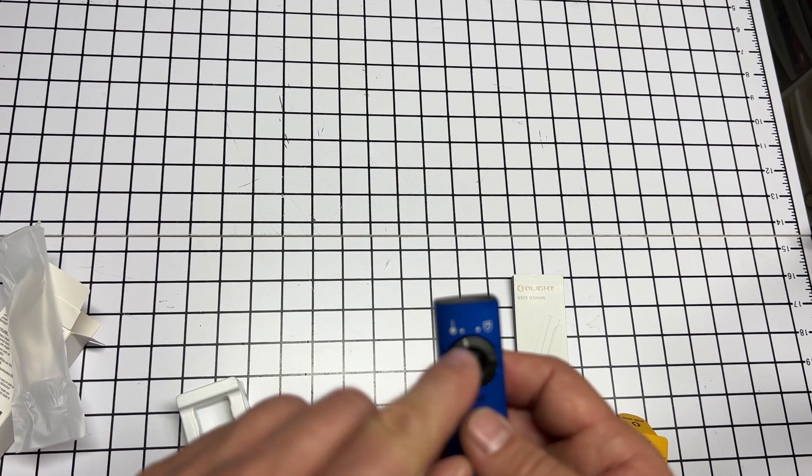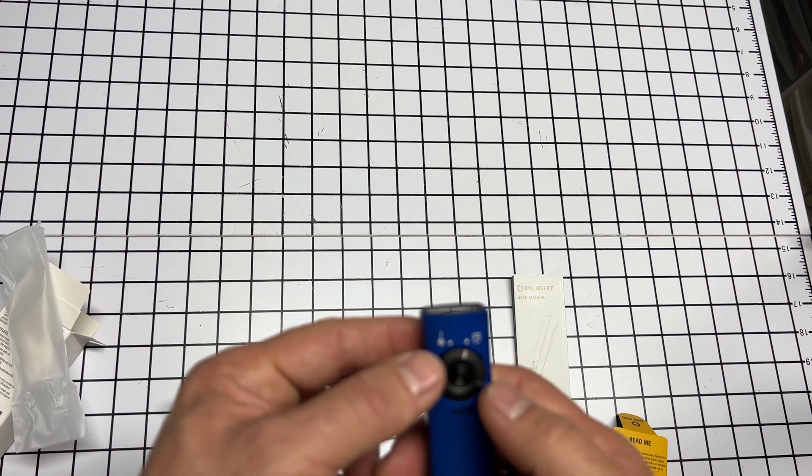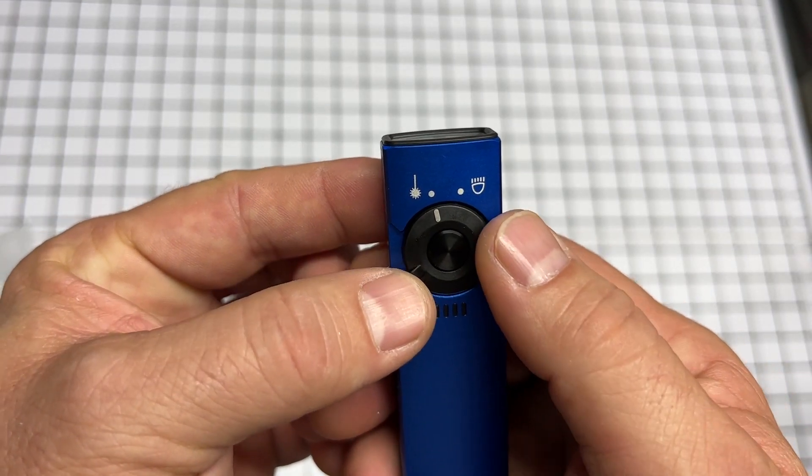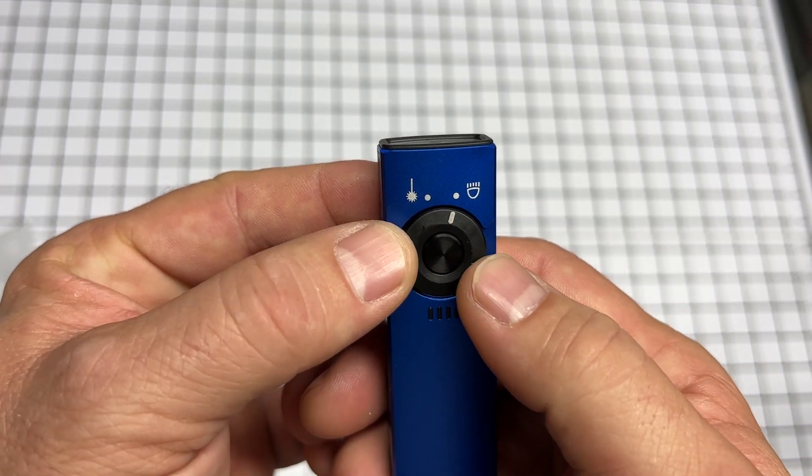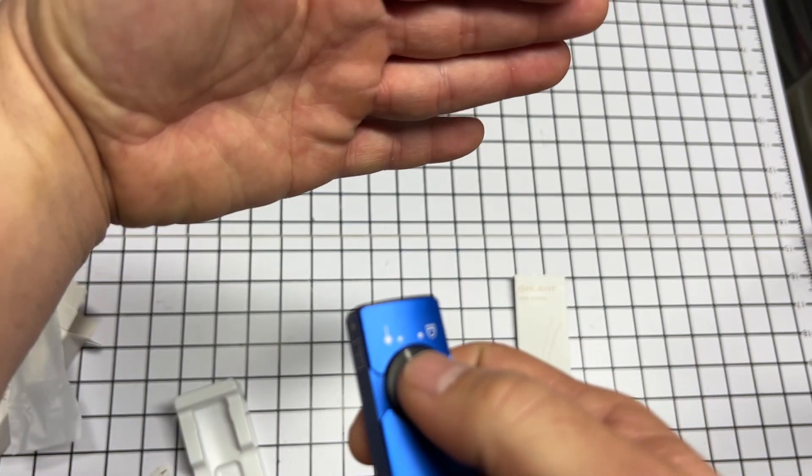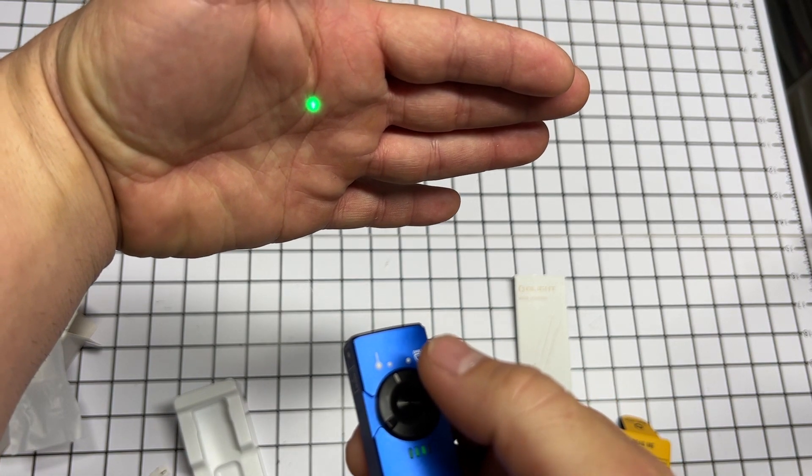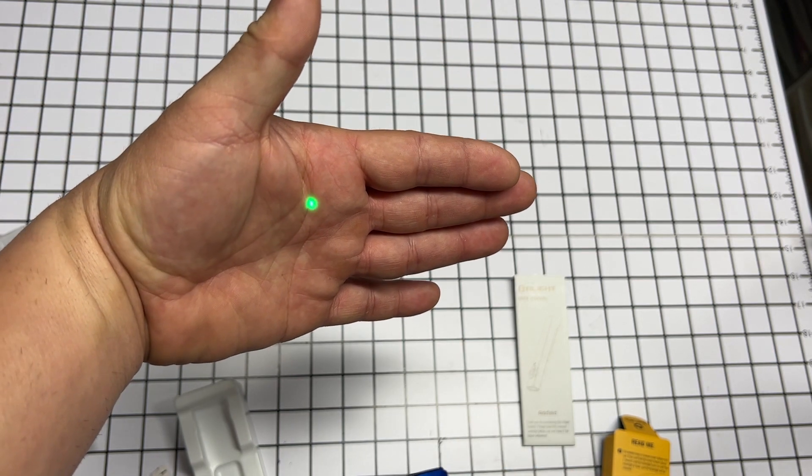Right now it's on the laser, or you can put it on the light. You see, this is for the laser mode and this is for the light mode. So since it's on the laser mode, I'm gonna press it for one second and that unlocks it. And now the laser is on.